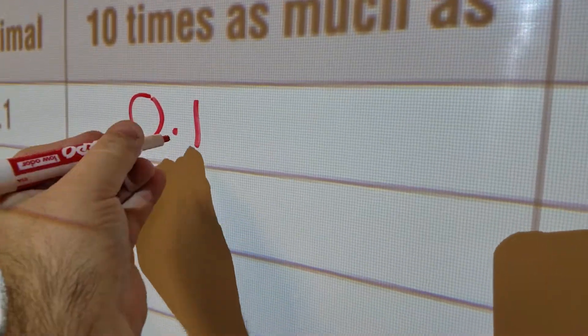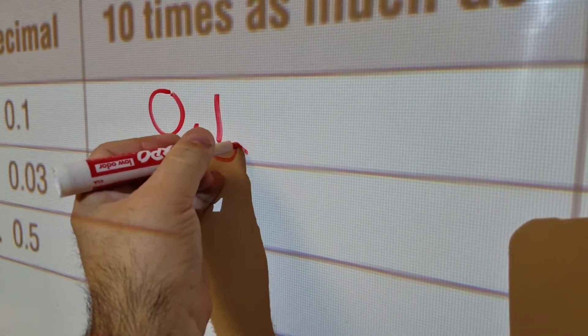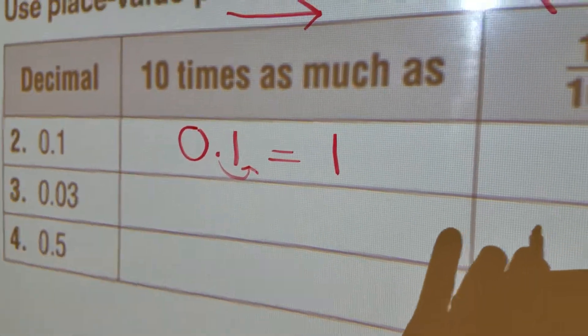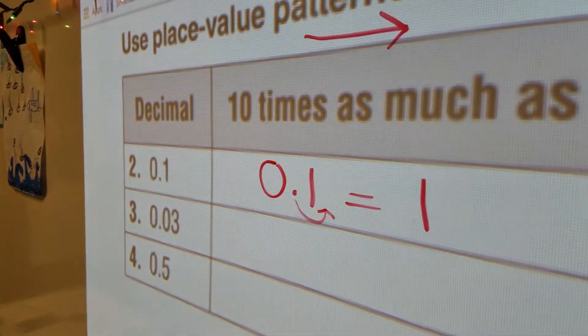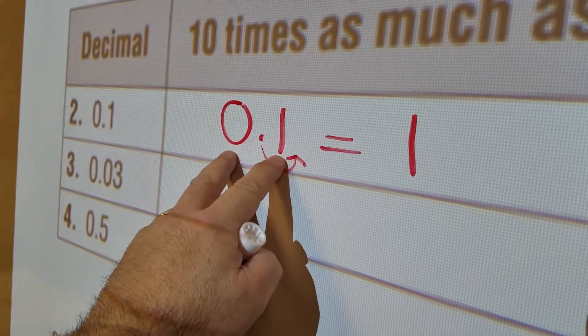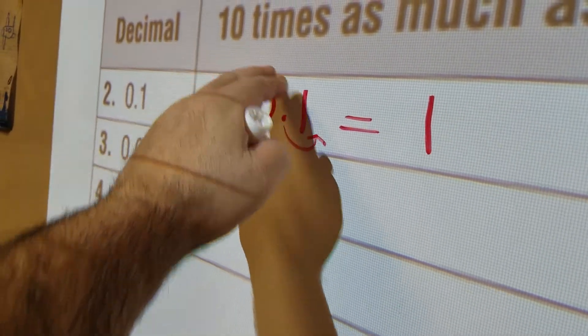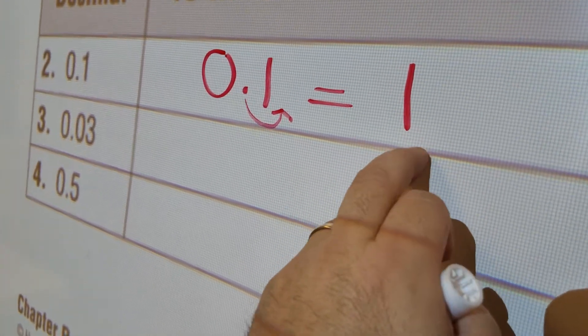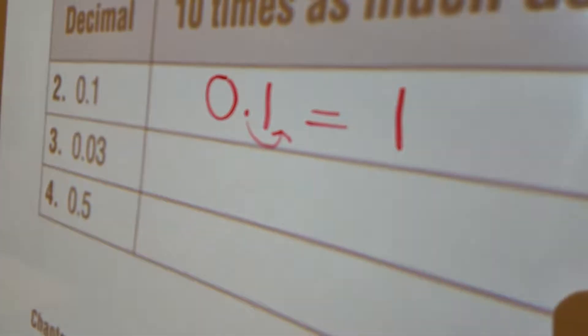we simply need to move the decimal over one place to the right. So I'm going to do that. I'm going to move this over one place to the right. So my answer simply is 1. And if you think about this in terms of money, I like to think about money. So we have 1 dime. 10 times 1 dime would give you a dollar. So this number 1 is 10 times as much as 1 tenth.